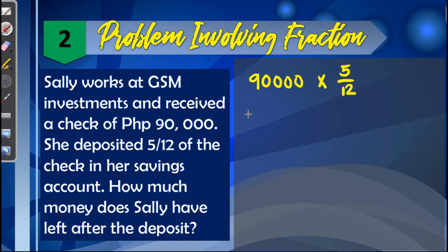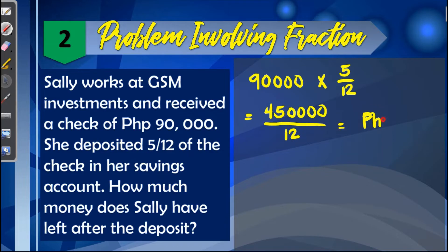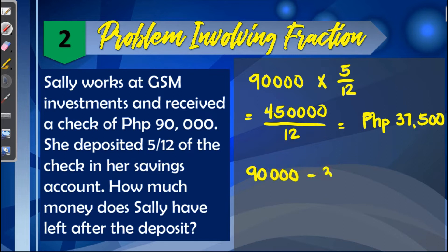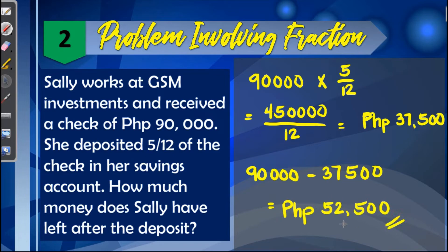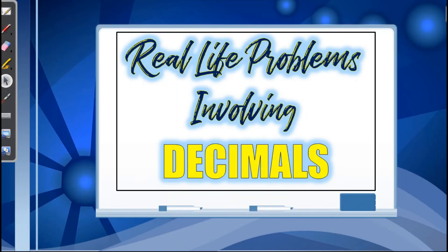By doing this, we find out how much Sally deposited. 90,000 times 5 equals 450,000, divided by 12, gives us 37,500. This is the amount deposited in her savings account. To find how much is left, we subtract: 90,000 minus 37,500 equals 52,500. So 52,500 is the amount left for Sally after the deposit.